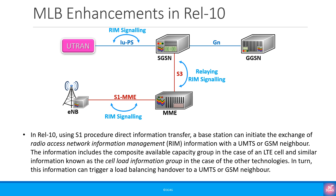Finally, this procedure was extended to 2G and 3G as part of 3GPP Release 10. Using the S1 procedure, Direct Information Transfer, a base station can initiate the exchange of Radio Access Network Information Management or RIM information with a UMTS or GSM neighbor. The information includes the composite available capacity group in the case of an LTE cell, and similar information known as the cell load information group in the case of other technologies. In turn, this information can trigger a load balancing inter-RAT handover to a UMTS or GSM neighbor.